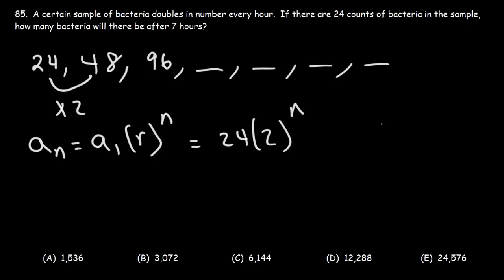Now our goal is to calculate the seventh term. But if you want to write a general equation for the number of bacteria, you could say that B equals 24 times 2 raised to the t, where t would be the time in hours. So the seventh term will be 24 times 2 raised to the 7.